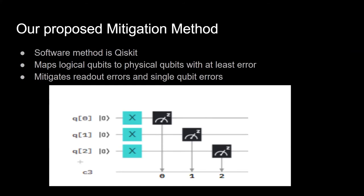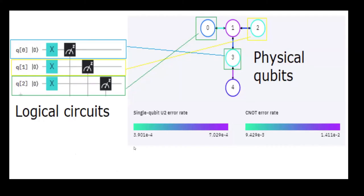This single qubit approach can only be effective in single qubit circuits. In the circuit diagram, three qubits are used, C3 is the classical register, measurement of each qubit is done using a Z gate, and an XX gate is also used. The mapping mechanism maps three logical qubits to physical qubits. U2 gate error and CX gate error have been measured, and the graph shows blue, green, and yellow lines representing different mapping pathways comparing single qubit U2 error rate and CX error rate as output.